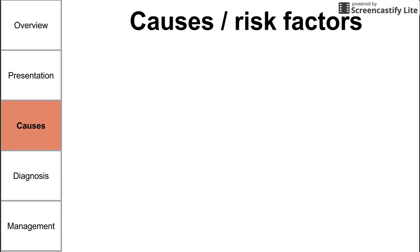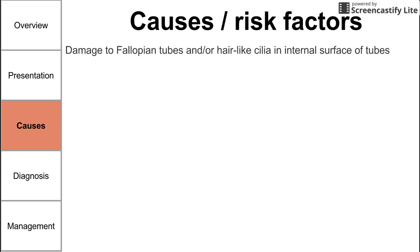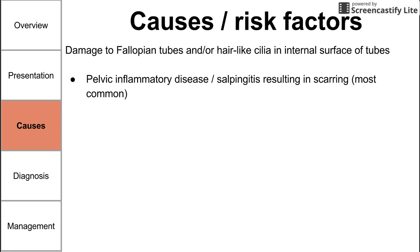The causes and risk factors of ectopic pregnancy mainly revolve around damage to the fallopian tubes and the hair-like cilia on the inner surface of the tubes. In pelvic inflammatory disease, there's an inflammatory process surrounding the fallopian tubes — salpingitis — which can result in scarring. This is the most common cause and risk factor. Infertility is another risk factor; the theory is that damage to the tubes causes both the infertility and the ectopic pregnancy.